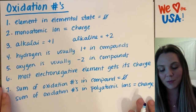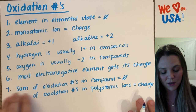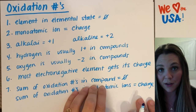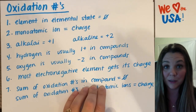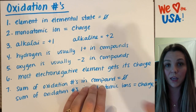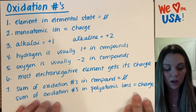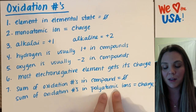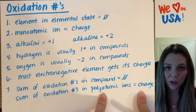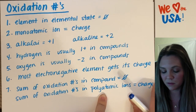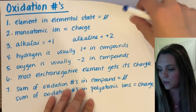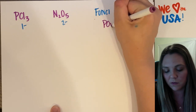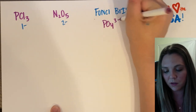Rule number seven: the sum of the oxidation numbers in any compound is going to be zero. They even out. The sum of oxidation numbers in polyatomic ions is whatever that ion's charge is. Let's give an example — how about phosphate, PO4 three minus.